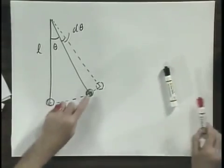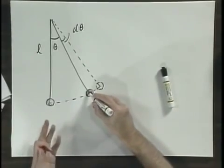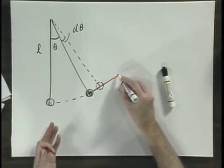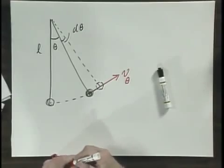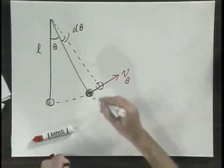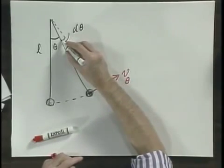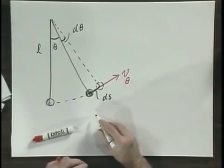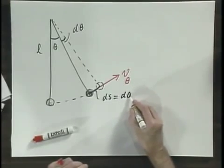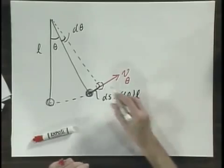This object at this moment here has a velocity, let's say it has a velocity in this direction, tangential. I call it v of theta. And in the time that this angle d theta takes place, there is here a little arc. And I call the arc dS. And that little arc dS is d theta in radians times the length L.